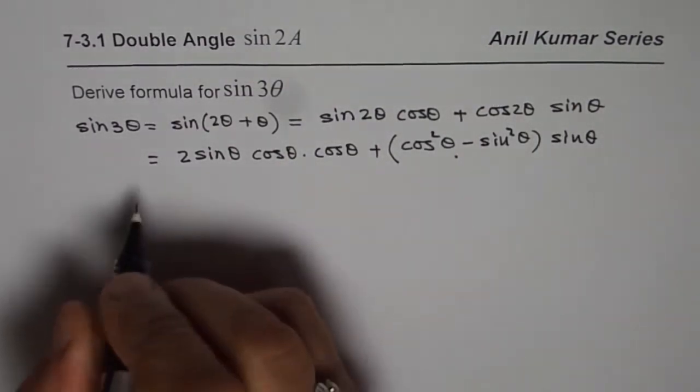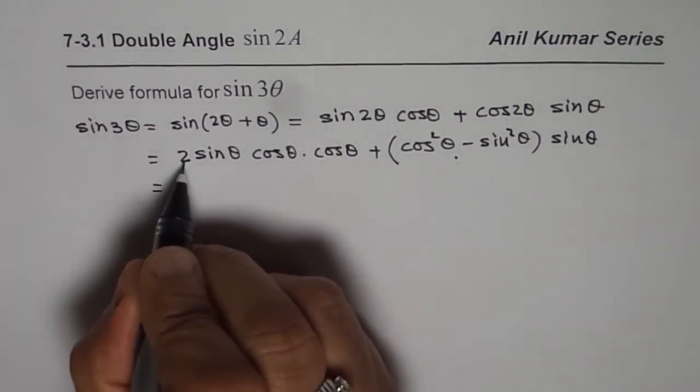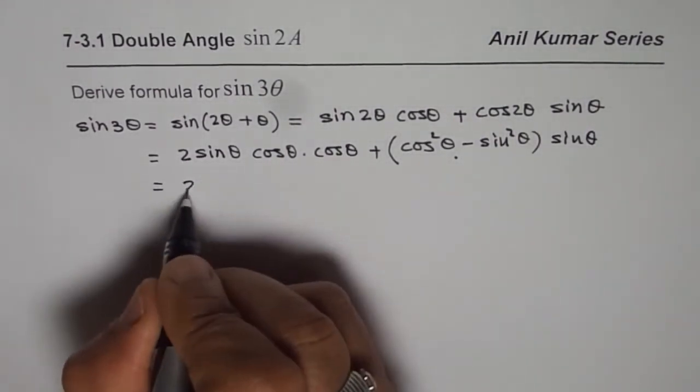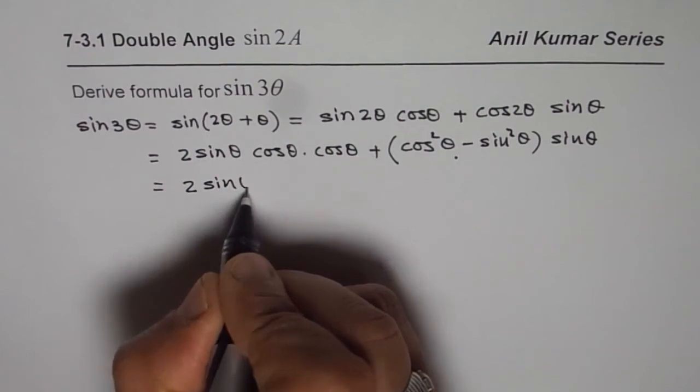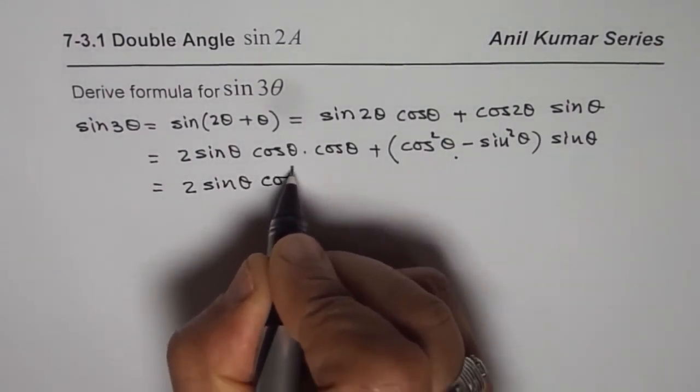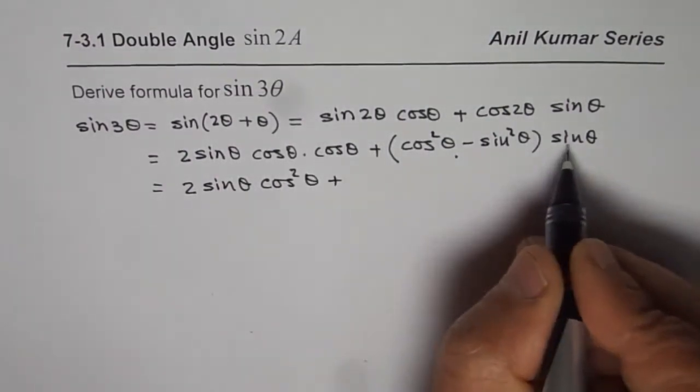So we have options at this stage. When we combine this, we get 2 sin θ cos² θ, and here we can expand.